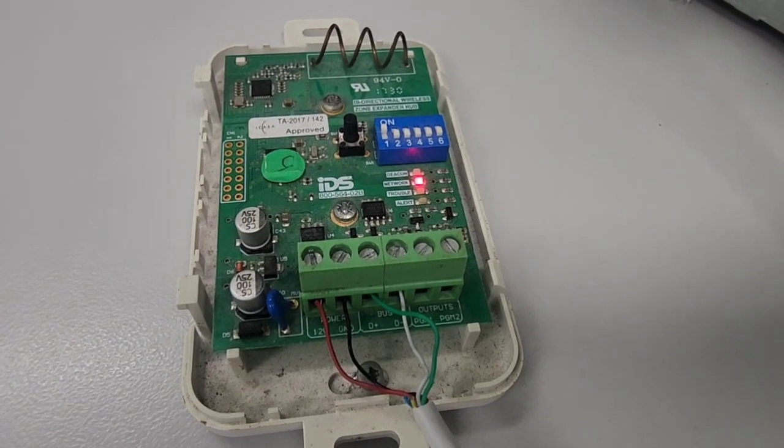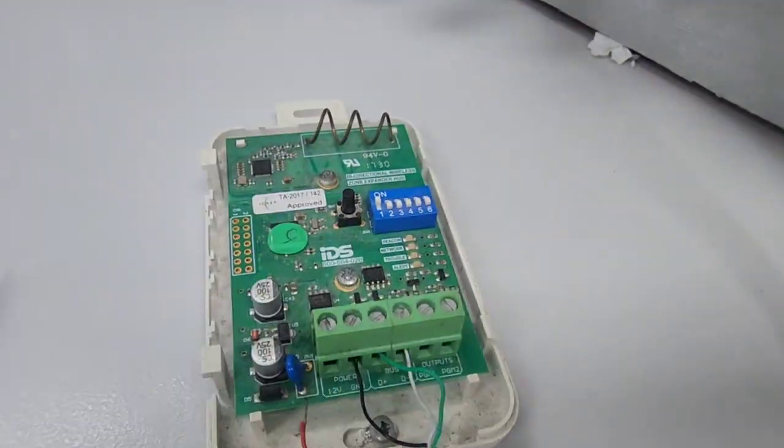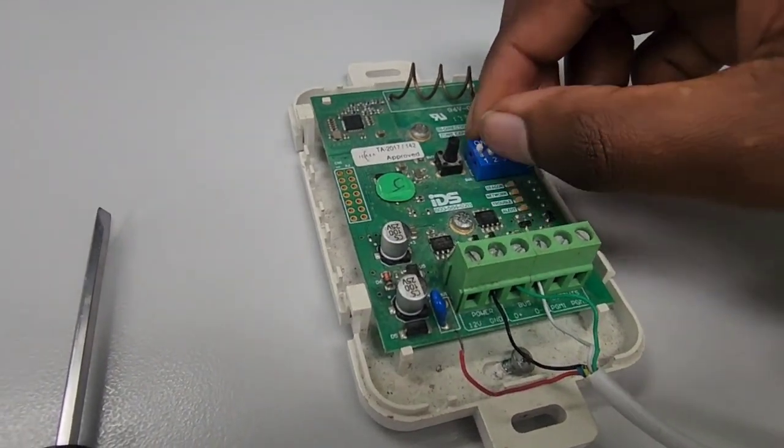Okay, so to default the wireless receiver, the first thing you need to do is remove power from the receiver. Once you've done that, you then need to put all the DIP switches up.